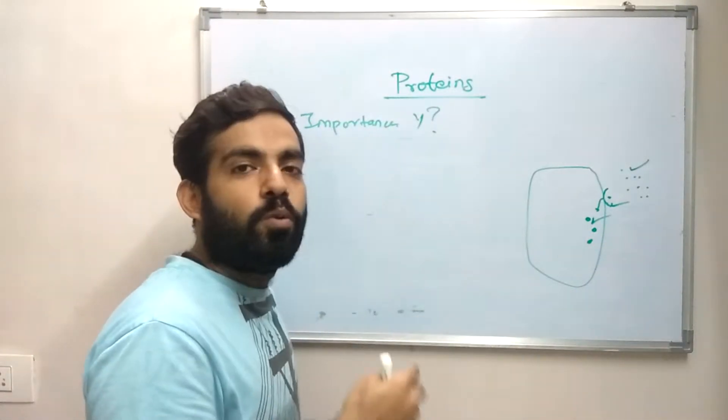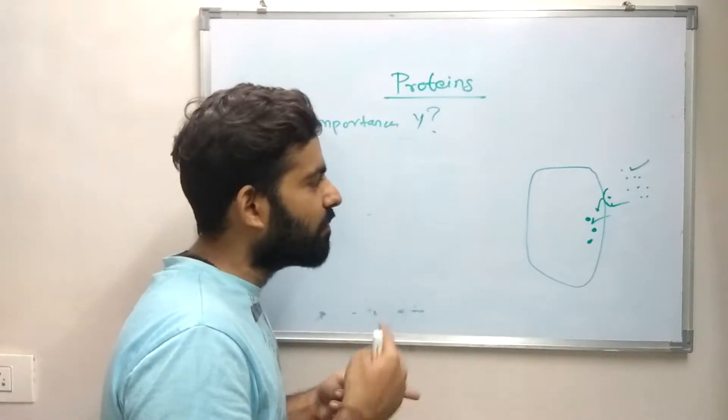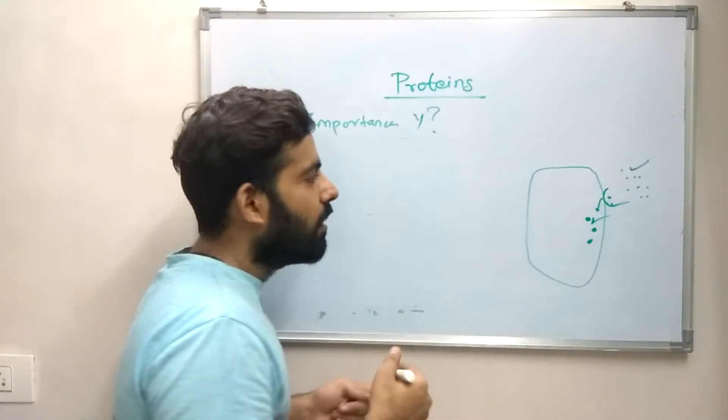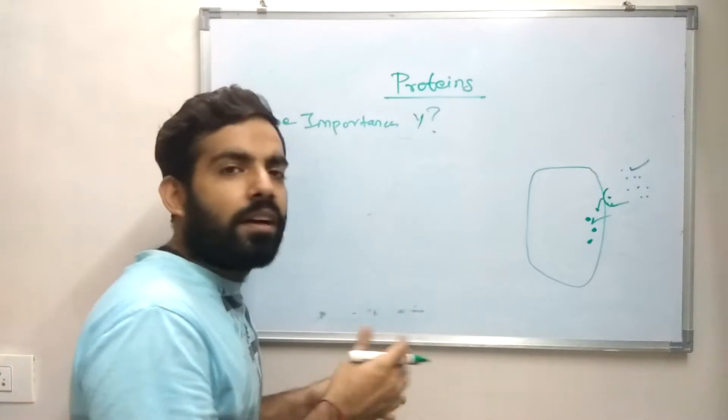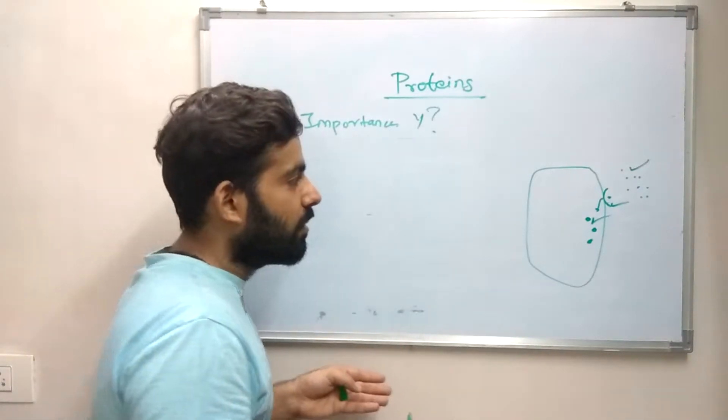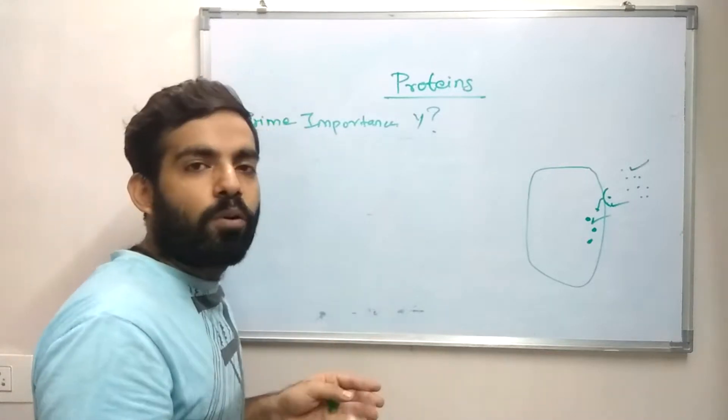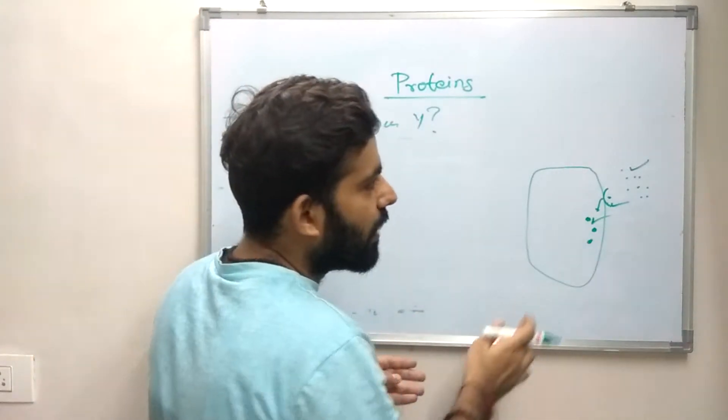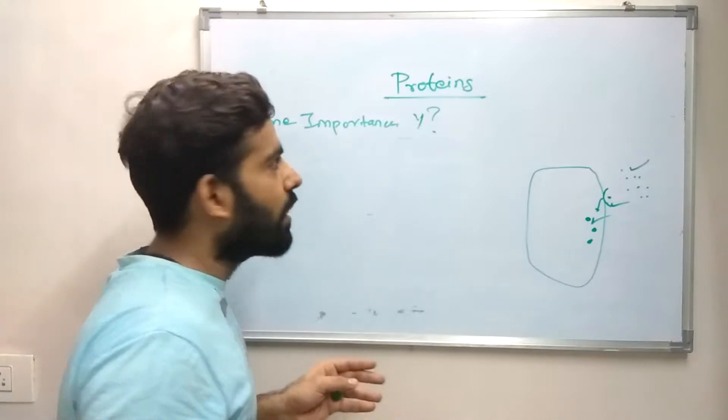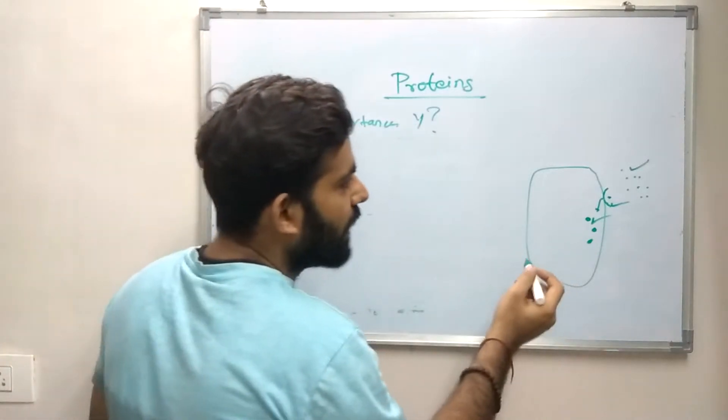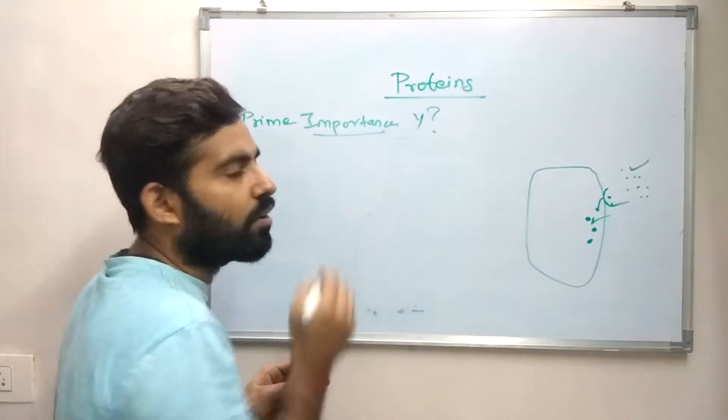Now the second messengers further activate different components and this leads to transcription, translation and further production of proteins. And in this process there are many other components which are also proteins. So the basic mechanism is because of proteins. The basic mechanism would be impossible without proteins. From this process we can understand the importance of protein for a cell.